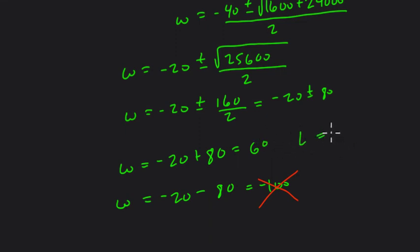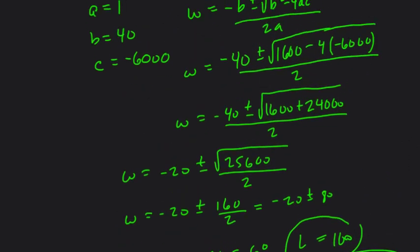And then length, of course, is 40 more than that, or 100. So those are our two dimensions. L is 100, W is 60. You can check it out: 60 times 100 is 6,000, and that works for the soccer field.